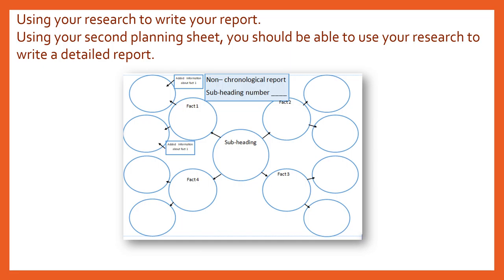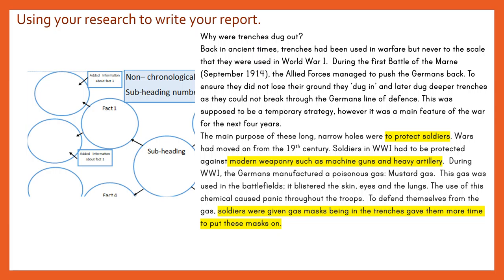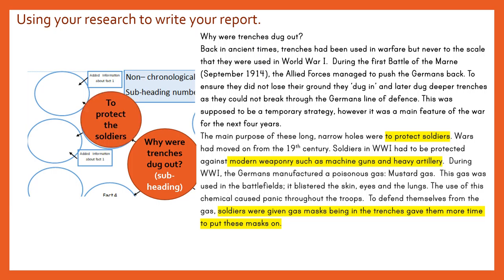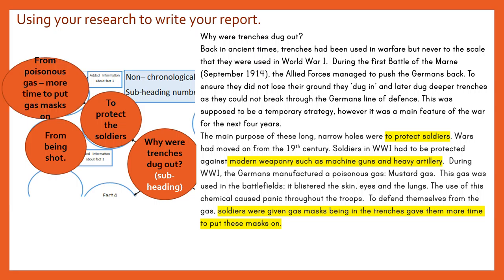Using your research to write your report. Using your second planning sheet, you should be able to use your research to write a detailed report. Your subheading will be first and then you will use these three circles for one paragraph, these three circles for paragraph two, and so on. So this is my planning from the research I put on. We've got 'Why were the trenches dug out?' — this was my subheading. My evidence was to protect the soldiers from being shot and from poisonous gas, and to give more time to put the gas masks on.